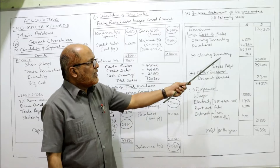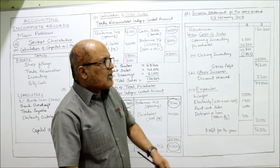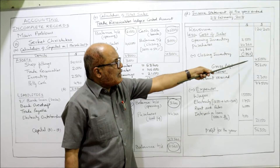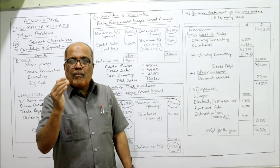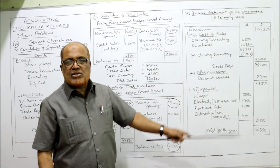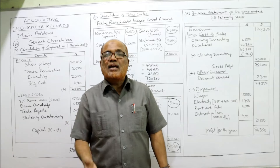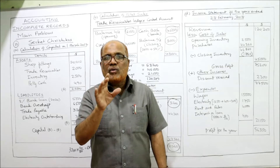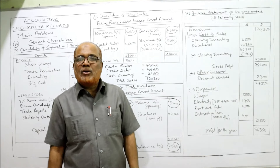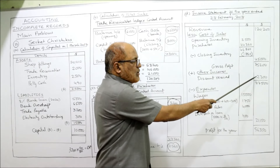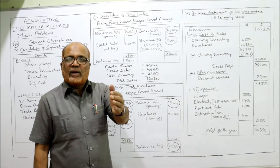Gross profit = Sales revenue minus cost of sales = $120,200 minus $45,000 = $75,200. Other income: discount received $2,300, which is added to gross profit. Total profit before expenses = $75,200 + $2,300 = $77,500.